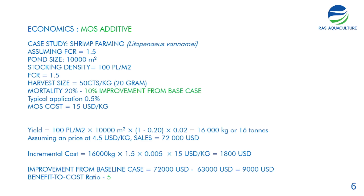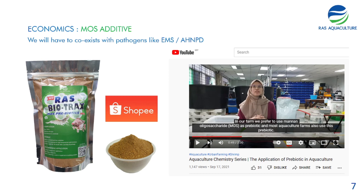The incremental cost incurred by adding prebiotics or MOS into the feed: 16,000 kg total yield × FCR 1.5 × 0.5% inclusion rate × $15 USD per kilo for MOS gives a total incremental cost of only $1,800. The total improvement from the baseline case of 30% mortality is actually about $9,000, bringing your benefit-to-cost ratio to 5. Based on this good BCR, we've decided to apply MOS across all of our farms — mud crabs, shrimps, and even fish farms.